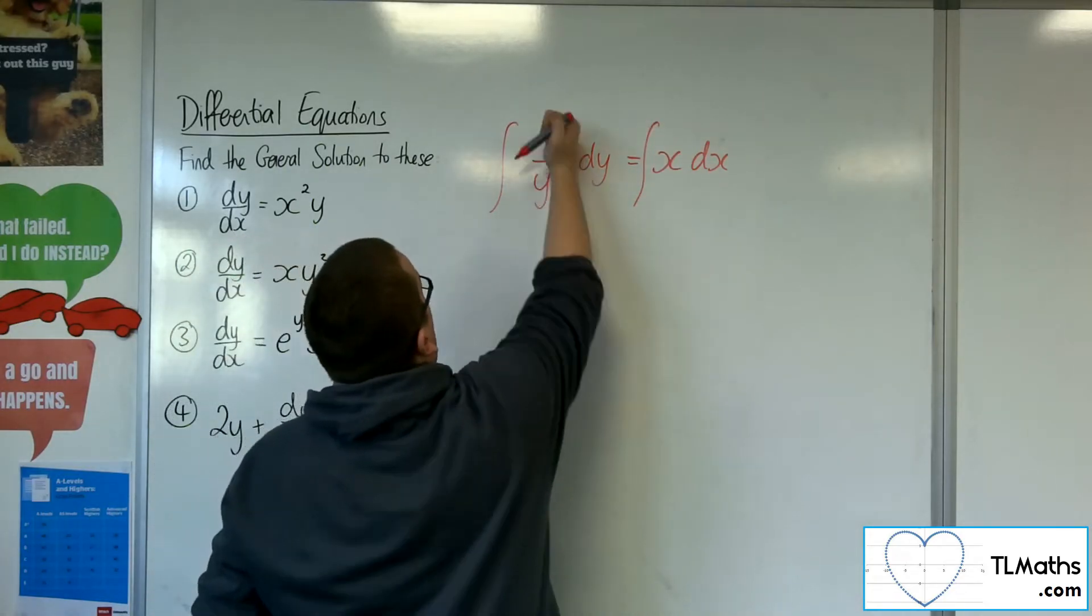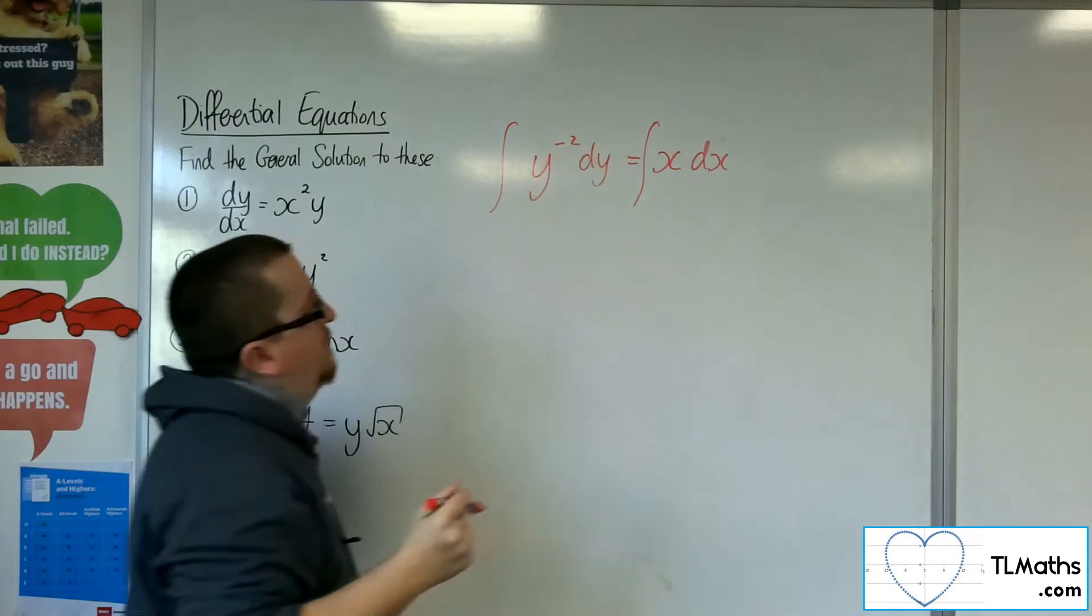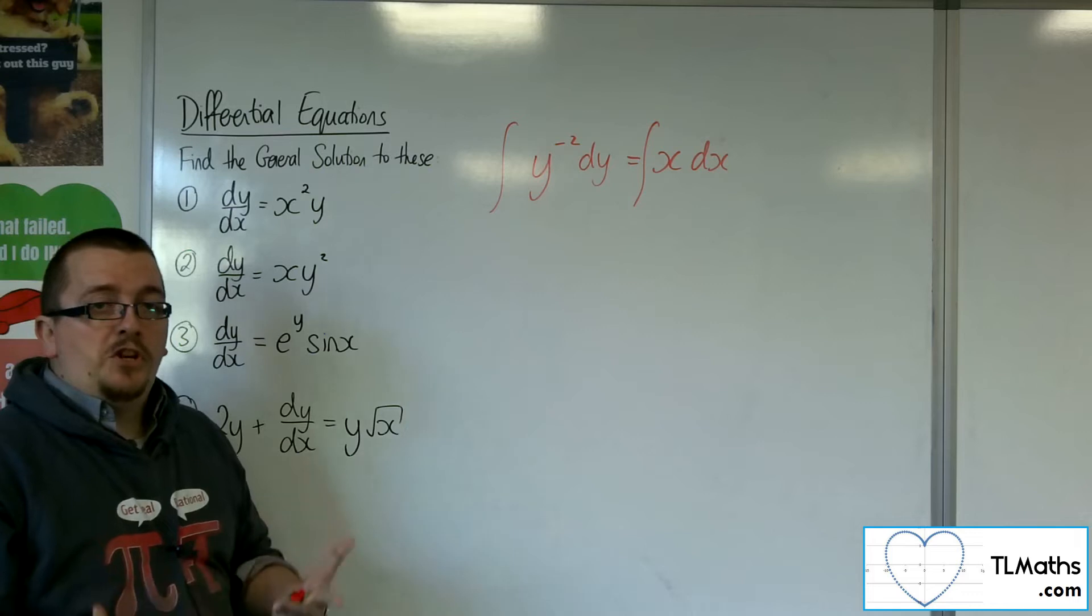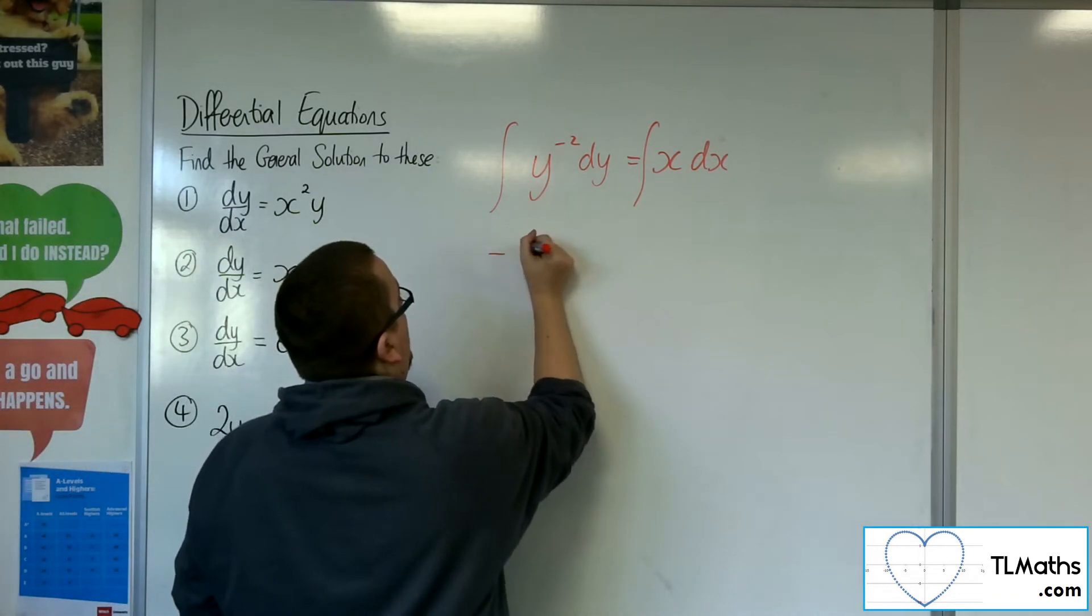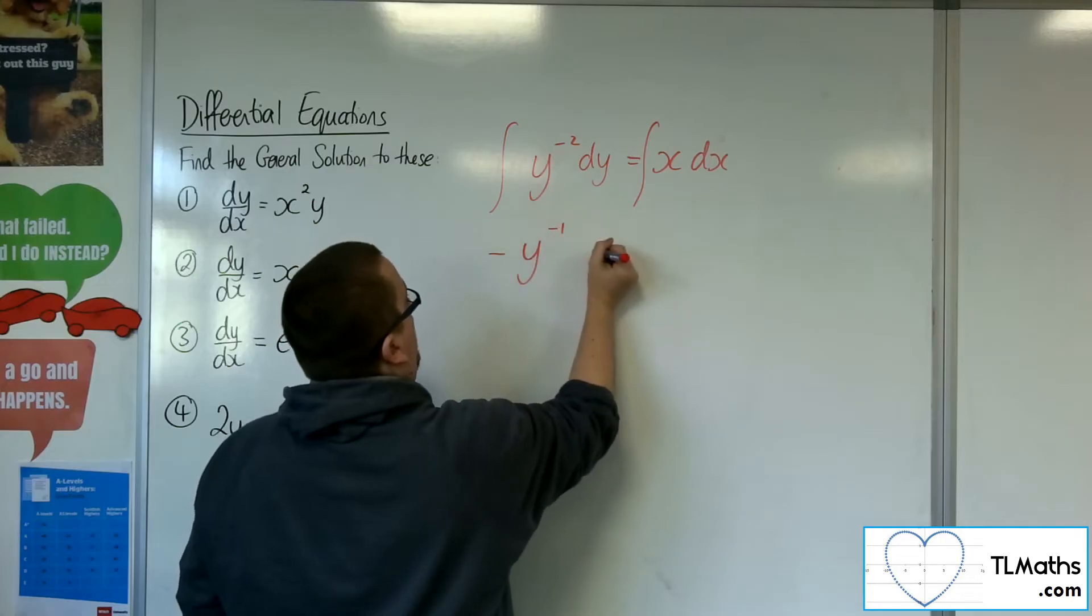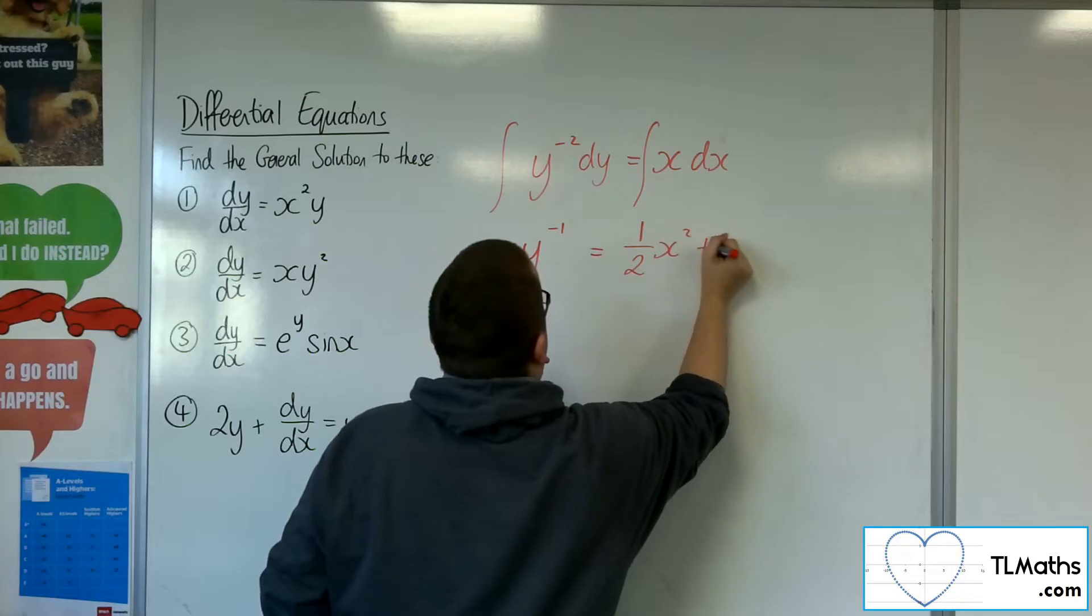Now 1 over y squared we know is y to the minus 2. So y to the minus 2 will integrate to adding 1 to the power, dividing by the new power, minus y to the minus 1. The x integrates to a half x squared plus c.